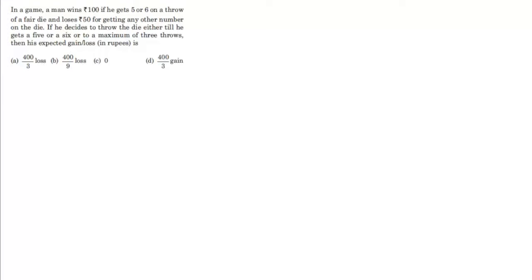Now here's the question. In a game, a man wins 100 if he gets 5 or 6 on a throw of a fair die and loses 50 for getting any other number on the die. If he decides to throw the die either till he gets a 5 or a 6 or to a maximum of 3 throws, then his expected gain or loss in rupees is.